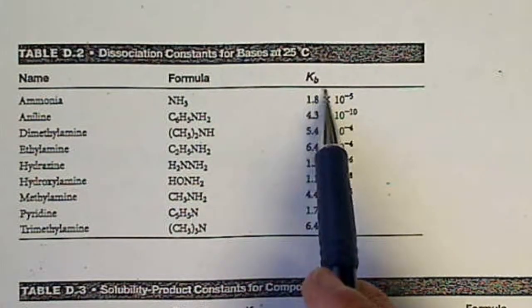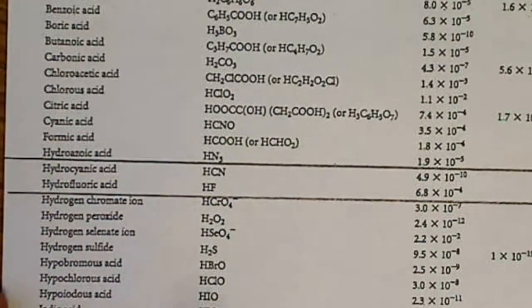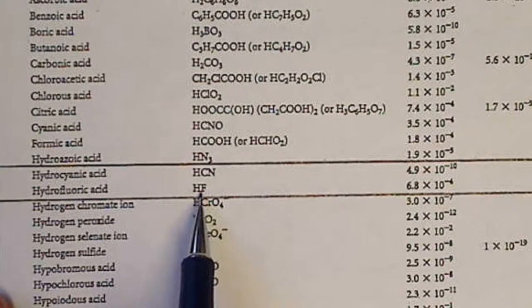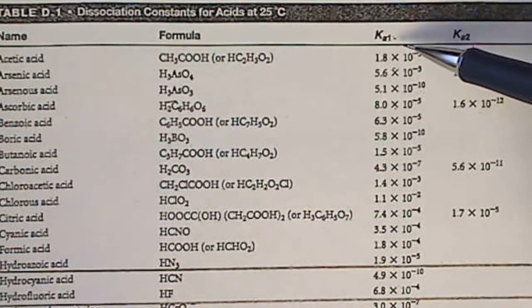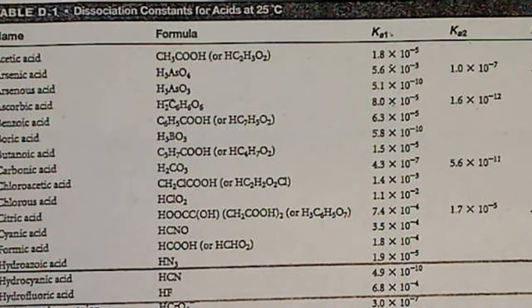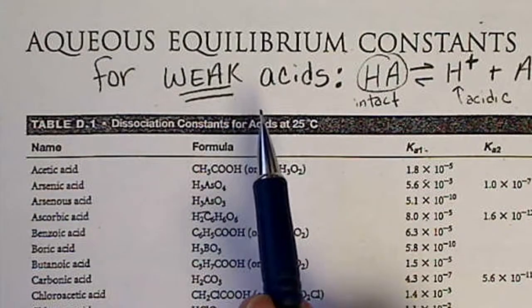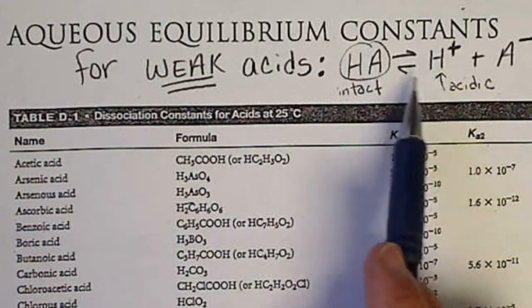On the next page, we're also going to look at a Kb for any base. Looking at the magnitude of these constants — for example, HCN versus HF — these are both weak acids because there is a dissociation constant associated with them. Remember, a strong acid goes all the way to the right with 100% dissociation, and so there is no equilibrium established with a strong acid or a strong base. So a strong acid will not appear on this table.